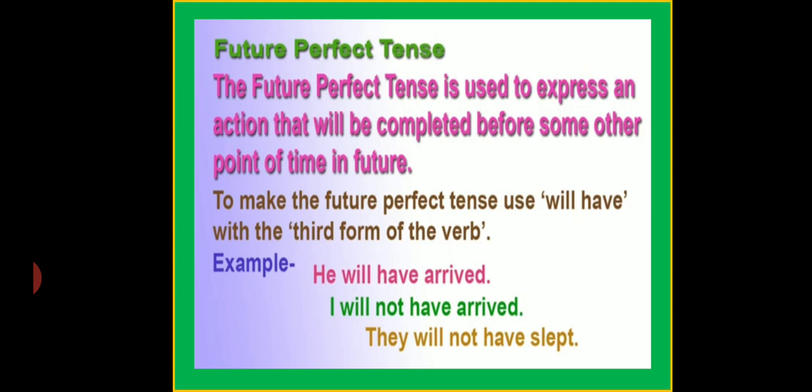To make the Future Perfect Tense, use will have with the verb's third form. Future Perfect Tense mein hum sentences ko banane ke liye use karte hain will have aur saath mein verb ki third form ko.